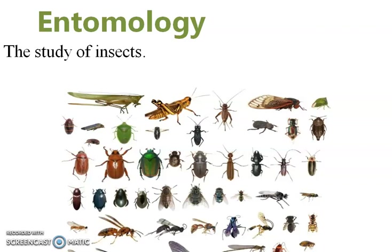The next subject is Entomology, which is the study of insects and their importance in agriculture. Insects are important pests of agricultural crops — they attack plants at different stages, resulting in severe crop loss. Entomology is a subject under Plant Protection. It covers insect structure, life cycle, and classification of insects.